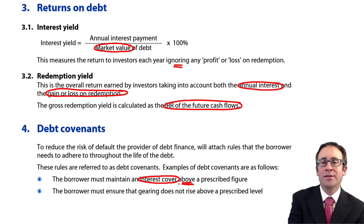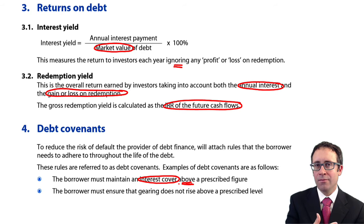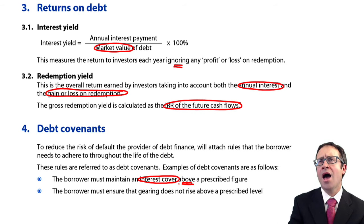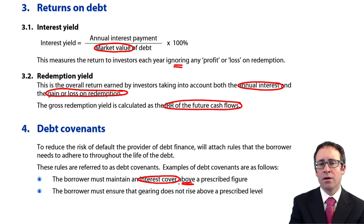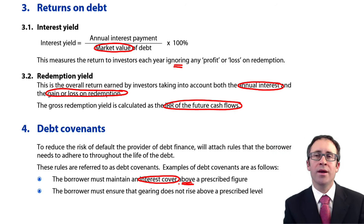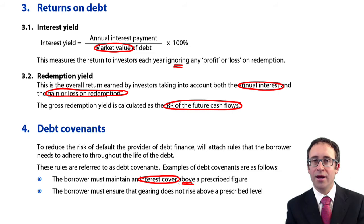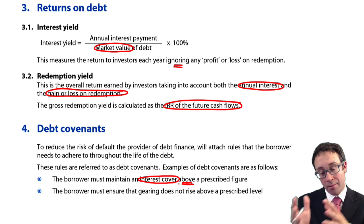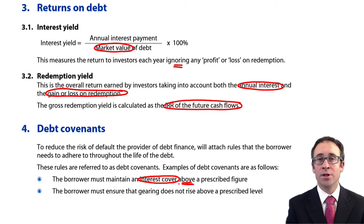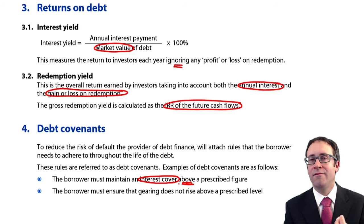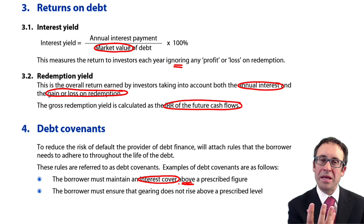Where this becomes examinable is: the exam can give you a debt covenant regarding interest cover, and you'll have to determine whether taking out a new loan breaches that covenant. You'd look at the impact on profits — what extra profits are made and what extra interest is incurred — then recalculate the new profit and new interest to find the new interest cover, and compare it to the covenant to see if you're still meeting it.